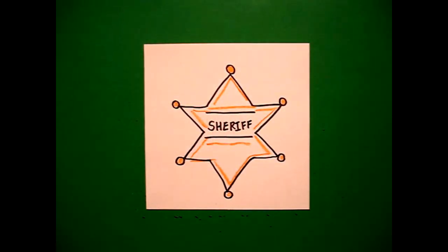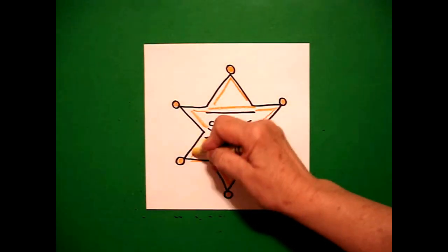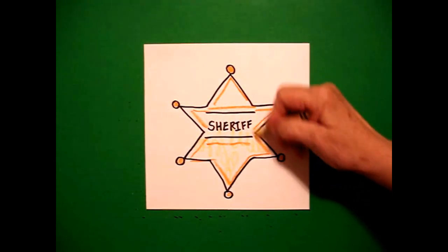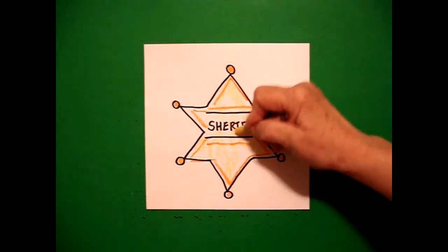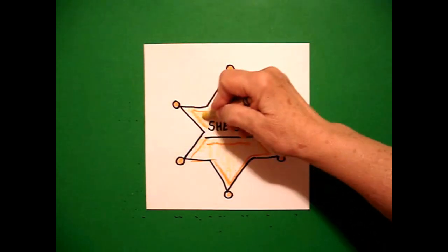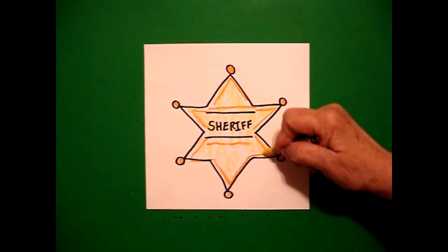Then with my yellow, I'm going to color over the whole entire section. Now if you have gold, that might work. If you want more of a brass look, maybe a light brown would work. But I ended up using these two color combinations.